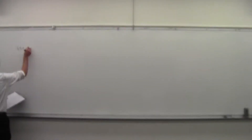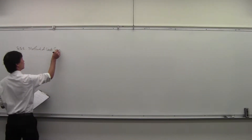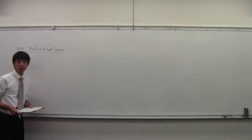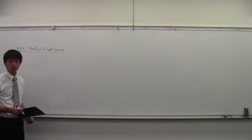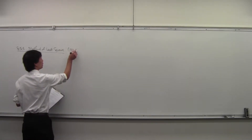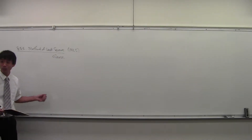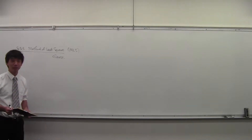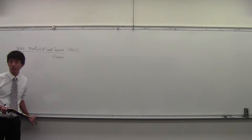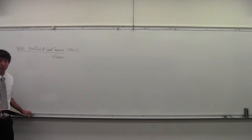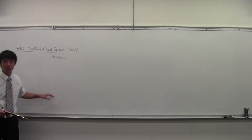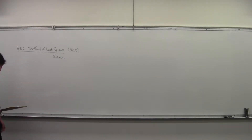Today we're going to do section 5.3, the method of least squares. As we mentioned last time, this technique was developed by Gauss, who is generally considered to be the greatest of all mathematicians of all time. He used it to predict the future position of an asteroid more accurately than anybody else could at the time.